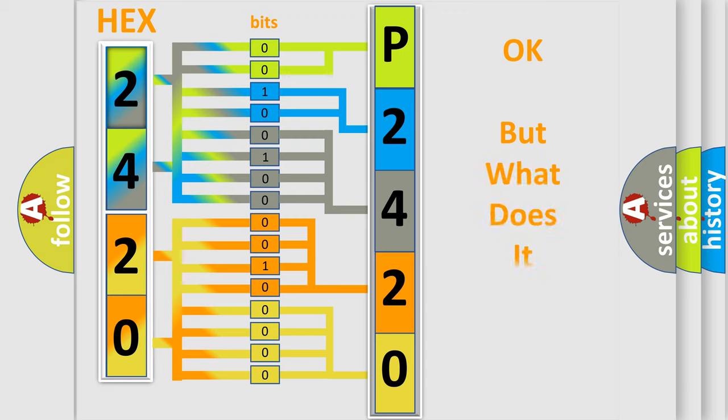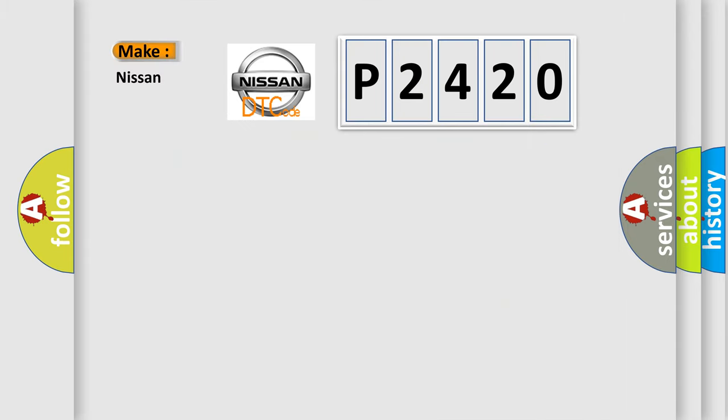The number itself does not make sense to us if we cannot assign information about what it actually expresses. So, what does the diagnostic trouble code P2420 interpret specifically for Nissan car manufacturers?